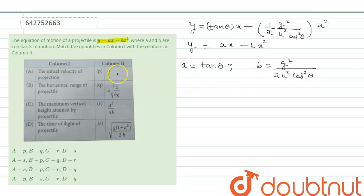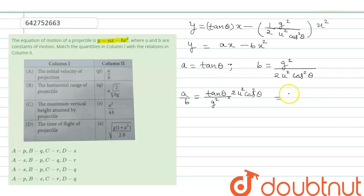Now, let's find a/b. Putting the value of a = tan θ and b = g / 2u²cos²θ, we get a/b = tan θ · (2u²cos²θ / g). Writing tan θ as sin θ / cos θ, one cos θ cancels, leaving us with u²sin 2θ / g, since 2 cos θ sin θ = sin 2θ. This is the value of horizontal range, so b matches with p.